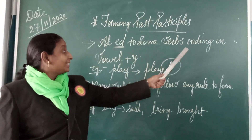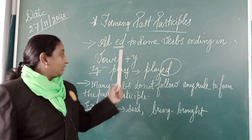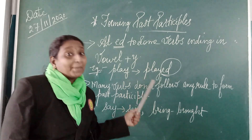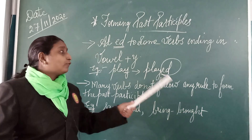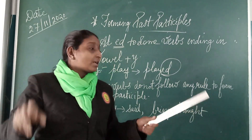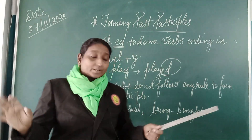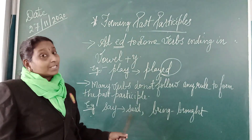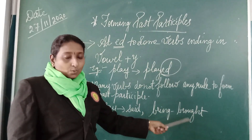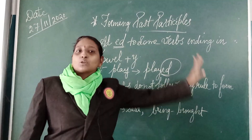The next rule: add E-D to verbs ending with a vowel plus Y. For example, the word 'play' — you add Y plus E-D and it becomes 'played.' The next important thing is that many verbs do not follow any rules for the past participle. For example, 'say' becomes 'said,' and 'bring' becomes 'brought.' These are in your textbook on page number 39. Just follow all the rules and note the different verbs that do not follow any rules of the past participle.